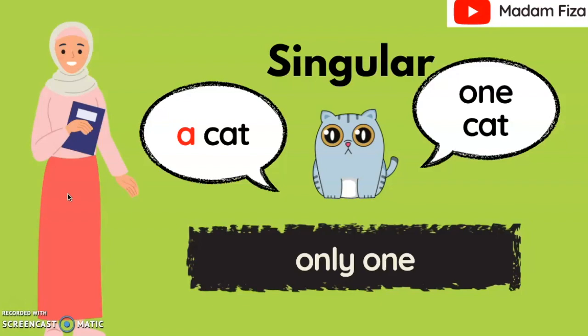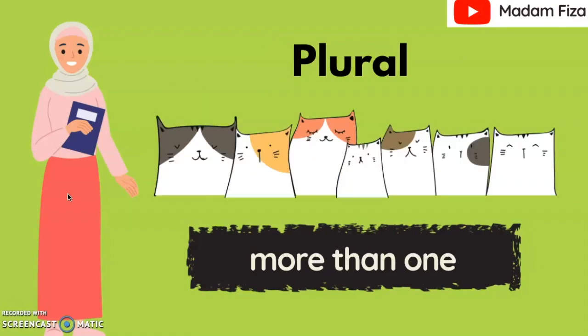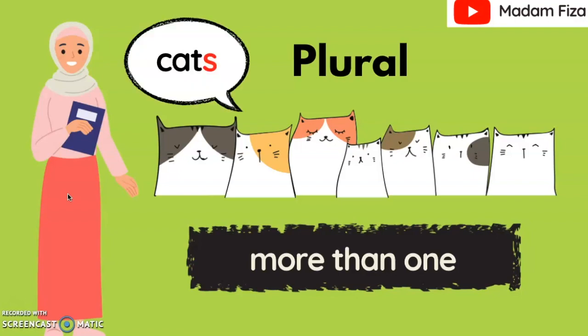What about the plural? Plural refers to more than one — lebih daripada satu. For example, we can say 'cats'. We should add S at the end of the word 'cat' so that it will become plural. Lepas ni, kalau kamu nampak ada huruf S di belakang nama haiwan itu, maksudnya haiwan itu lebih daripada satu.